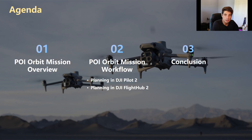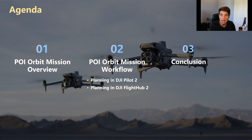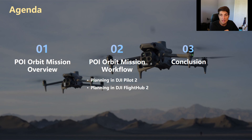Diving into the actual agenda here of what we're going to be talking about: first, talking about what is a point of interest orbit mission and why you would want to use it. Then really diving deep into how to plan a point of interest orbit mission, whether it's in the Pilot 2 app live in the field, or if you're planning it in the FlightHub 2 web browser and loading that into the controller. And then we'll have some final thoughts on the conclusion portion.